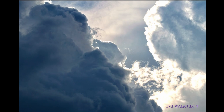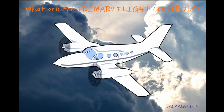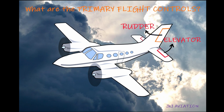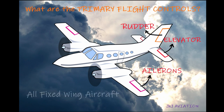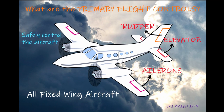First, let's see what are the primary flight controls in an aircraft. The elevator, rudder and the ailerons are the primary control surfaces in an aircraft. These control surfaces are installed on all fixed-wing aircraft to safely control it during flight.